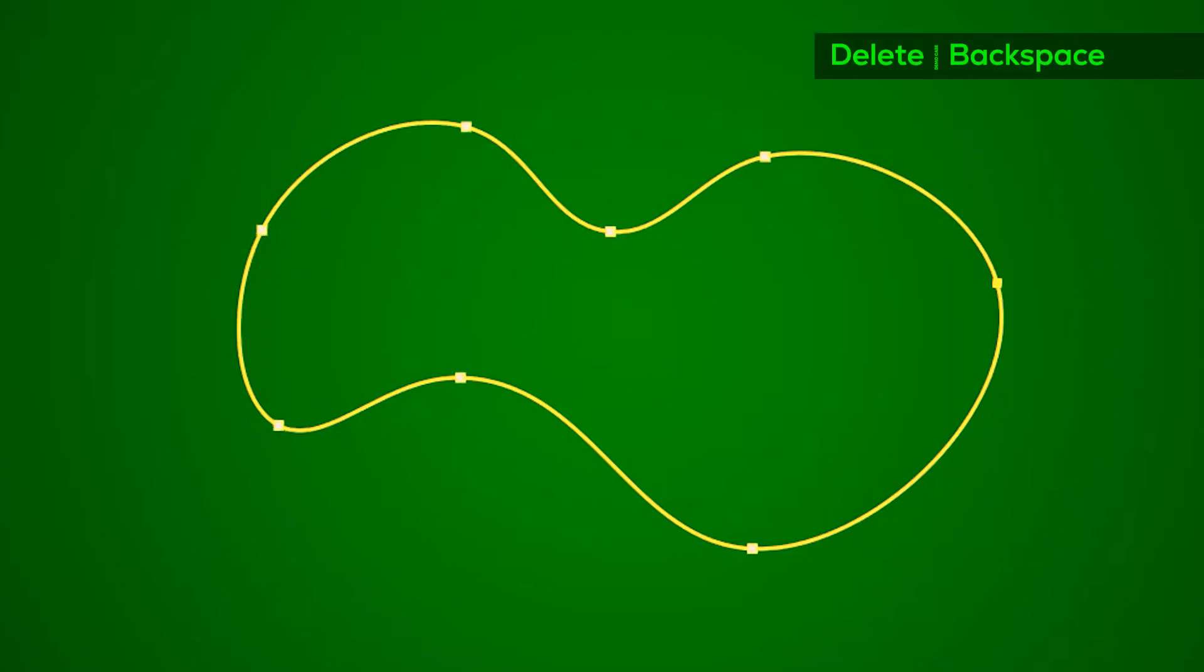Now, I'll show you how to delete anchors while using the curvature pen tool. Let's quickly create a path first. Suppose I want to delete this anchor. I just need to take the curvature pen tool and click on the anchor and then just hit delete or backspace.